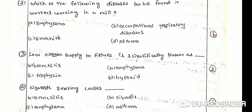Low oxygen supply to tissues is scientifically known as dash. Option A: Bronchitis. Option B: Emphysema. Option C: Asphyxia. Option D: Hypoxia. The correct answer is option D, hypoxia.